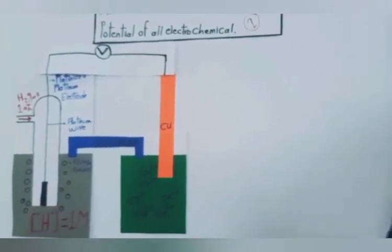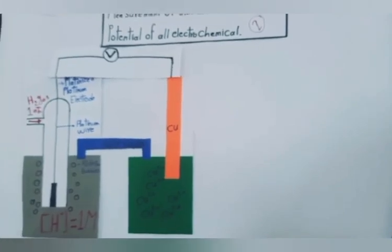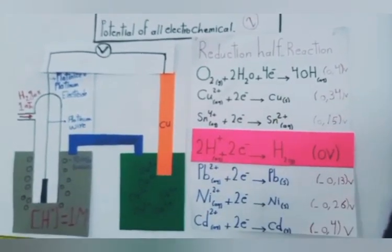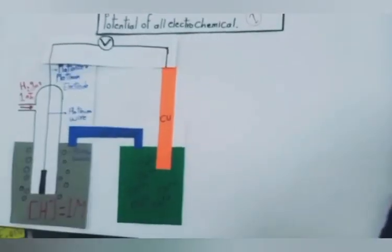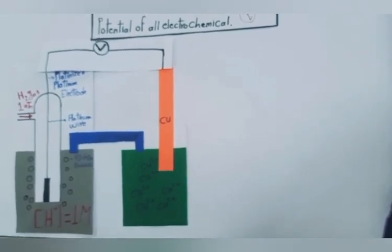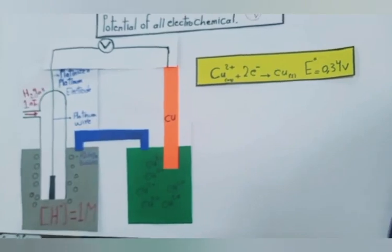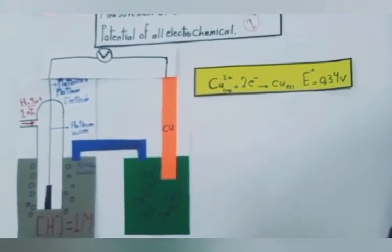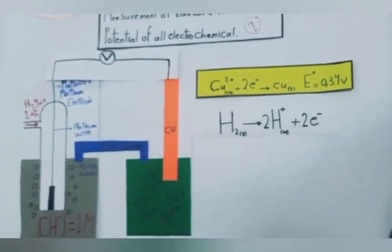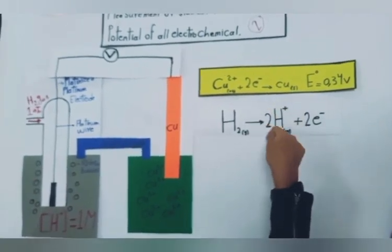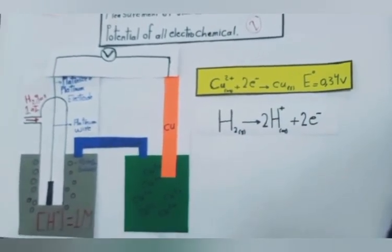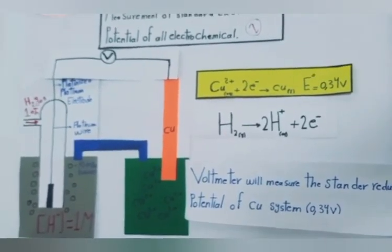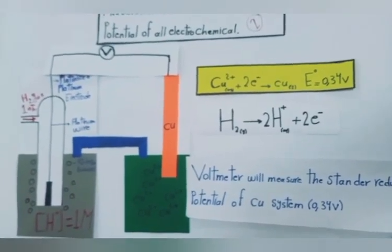For example, when we connect the SHE to a copper half-cell: copper is above hydrogen in the electrochemical series, so copper will act as the cathode. The redox half-reaction will be: copper ions will gain two electrons and be converted to solid copper, while hydrogen gas will lose two electrons and be converted to hydrogen ions. The voltmeter will measure the standard reduction potential of the copper system, which equals 0.34 volts.